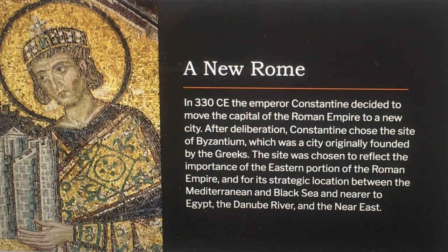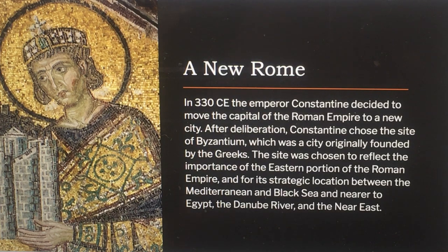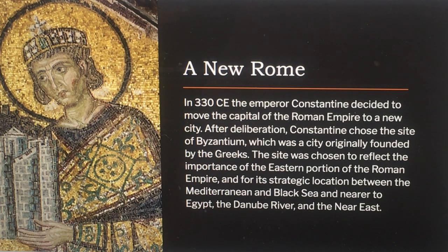In 330 CE, the Emperor Constantine decided to move the capital of the Roman Empire to a new city. After deliberation, Constantine chose the site of Byzantium, which was a city originally founded by the Greeks. The site was chosen to reflect the importance of the eastern portion of the Roman Empire and for its strategic location between the Mediterranean and Black Sea, and nearer to Egypt, the Danube River, and the Near East.